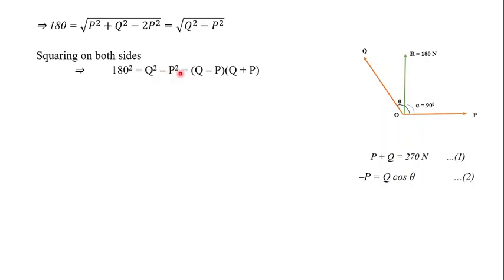Now, Q² − P² can be factored as (Q − P)(Q + P). We know that P + Q = 270 Newton, so we substitute that in: 180² = (Q − P) × 270.